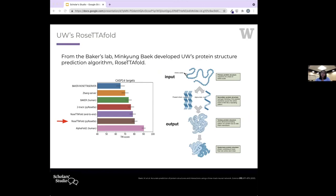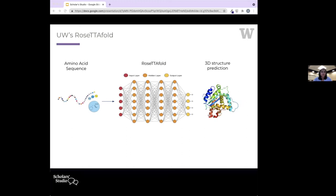At UW, at the Baker Lab, there is a postdoc who developed the second best deep learning algorithm that can predict a protein's 3D structure. The input is that amino acid sequence, or those letters, and the output is the 3D protein structure, as described by this general diagram. That middle part represents a generic deep learning model.